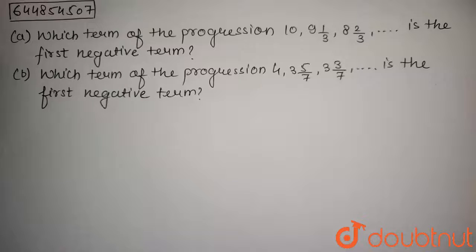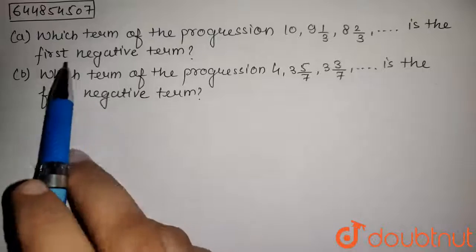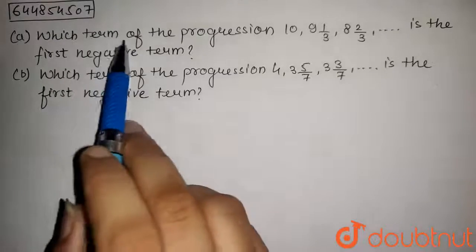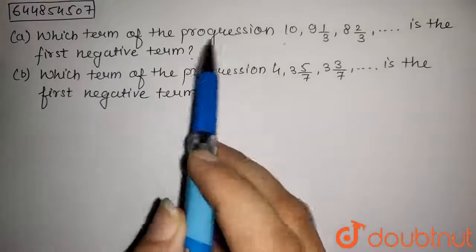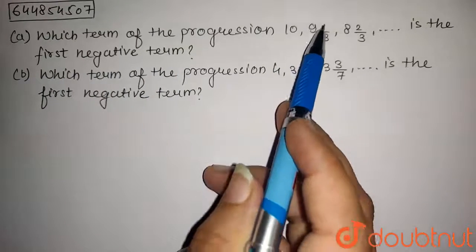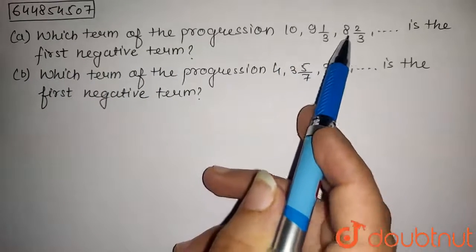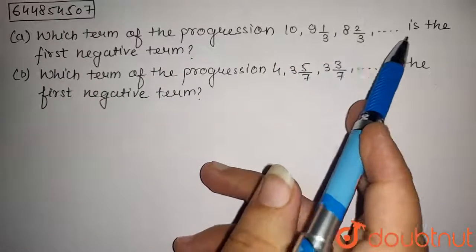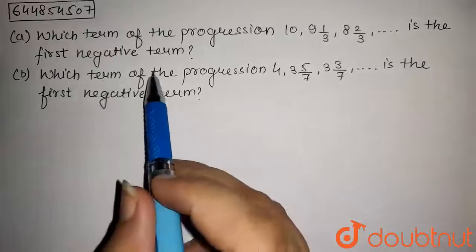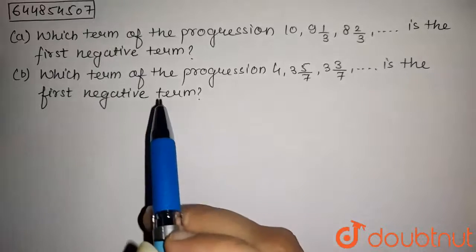The question is: first part — which term of the progression 10, 9⅓, 8⅔ is the first negative term?